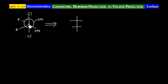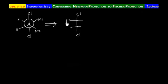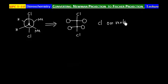This has two carbons — the front carbon and the circle is the back carbon. We want to convert into Fischer projection formula in which chlorines are on the vertical line. So we have to decide what groups are at each position on the vertical line.